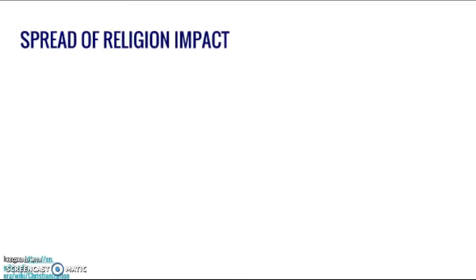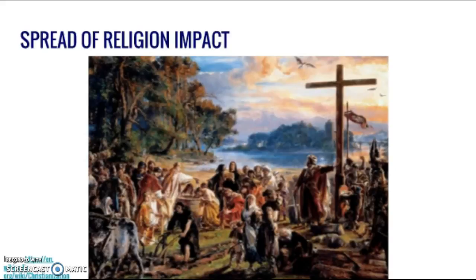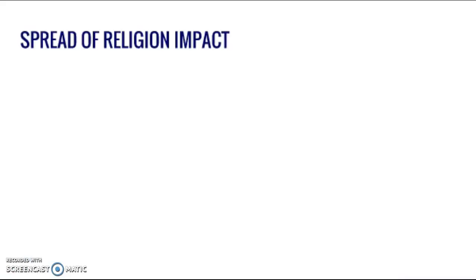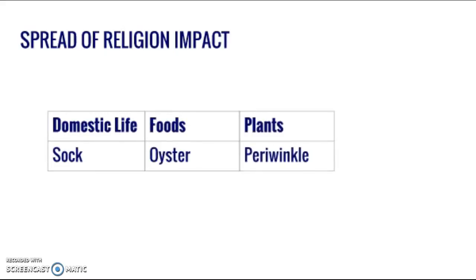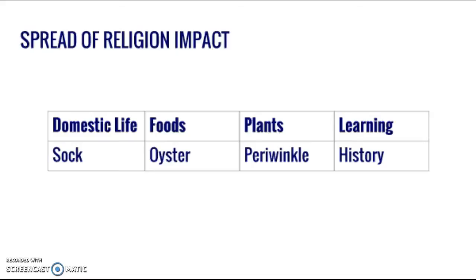The different words that came from different languages were more or less based on the background in which the language was introduced. From the 7th to 10th centuries, Latin was being introduced in the context of Christianity, so a lot of the words that came from Latin were religious. However, there were also influences in other categories like domestic life, foods, plants, and especially learning — because when people came to spread religion, they built temples and churches, which were also schools. All of these categories have words that came from Latin, and these words haven't gone through a lot of big changes, so it's very easy to see the resemblance between Latin and English.